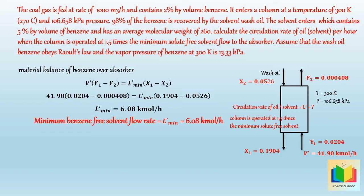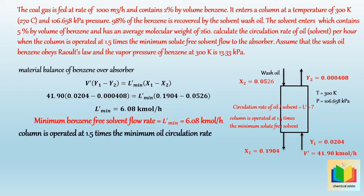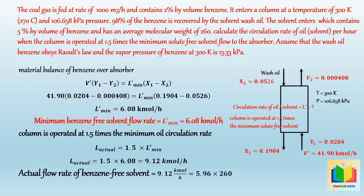Now let's calculate the actual flow rate of benzene-free solvent, L dash actual. As given, the column is operated at 1.5 times the minimum oil circulation rate, hence L dash actual equals 1.5 times L dash minimum. After putting in values and solving, L dash actual equals 9.12 kmol per hour. Multiplying by the average molecular weight of 260, the actual flow rate of benzene-free solvent equals 2371.2 kilograms per hour.